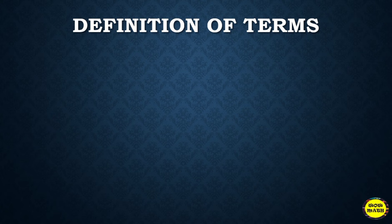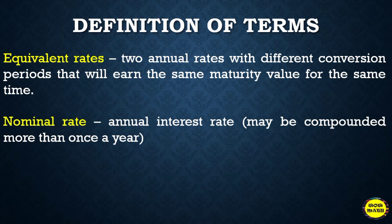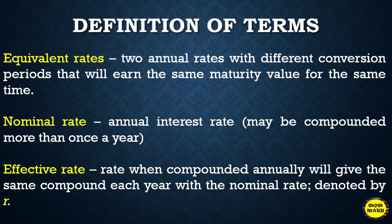We need to familiarize ourselves with some definitions. Equivalent rates are two annual rates with different conversion periods that will earn the same maturity value for the same time. The nominal rate is the annual interest rate that may be compounded more than once a year. The effective rate is the rate that when compounded annually will give the same compound interest each year as the nominal rate.